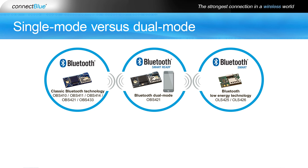In the middle are dual mode devices. These devices are also known as Bluetooth Smart Ready devices and include both Bluetooth Low Energy and Classic Bluetooth. A typical dual mode device is a smartphone, PC, or the Connect Blue Bluetooth Zero Port module OBS 421.